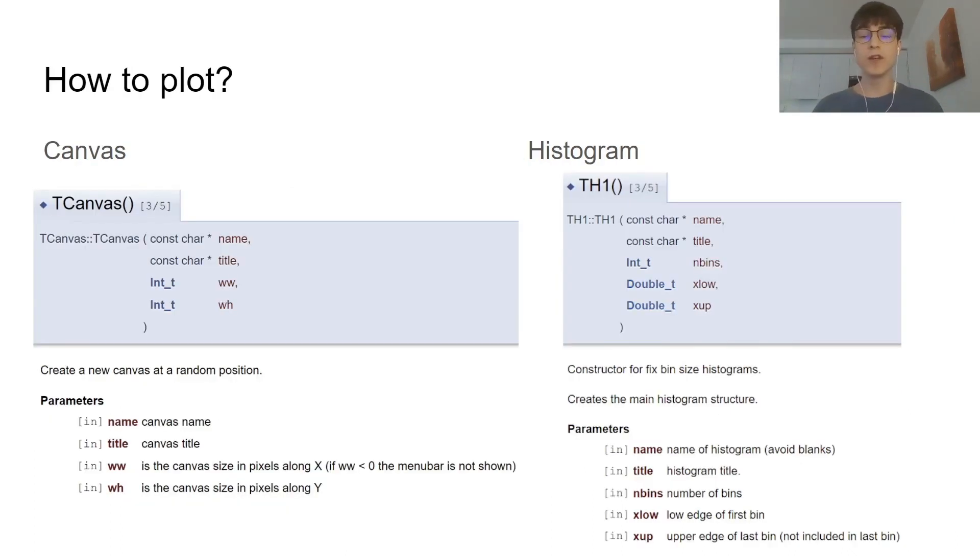To plot anything in ROOT, you need first to create a canvas. It takes a name, like its identity, a title, and its dimensions in length and height, in pixels.